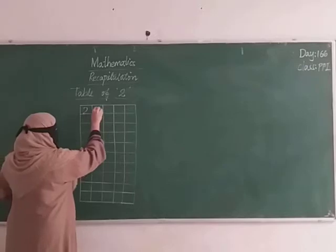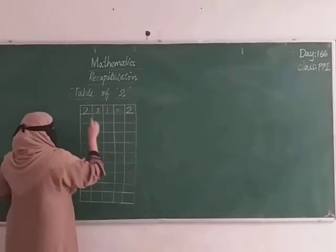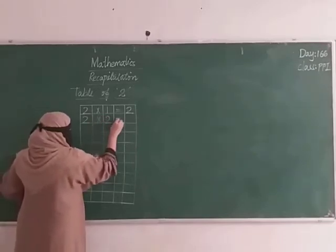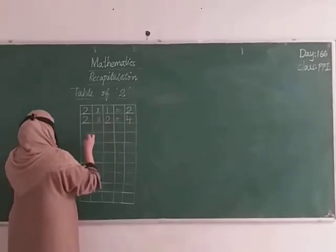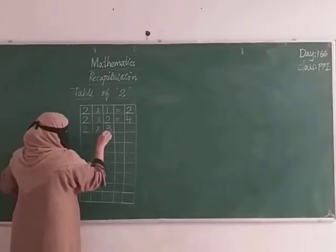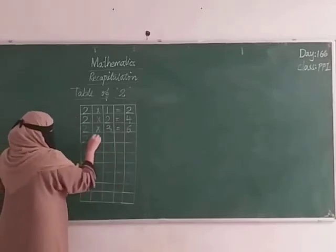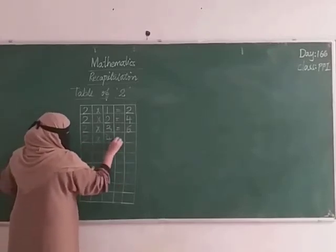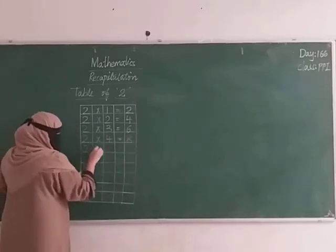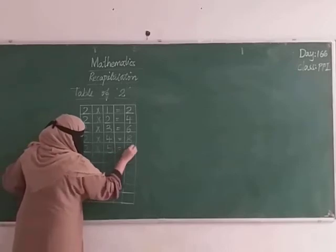Two ones are two. Two twos are four. Two threes are six. Two fours are eight. Two fives are ten.